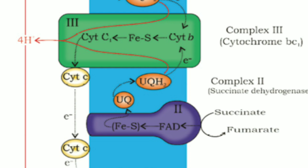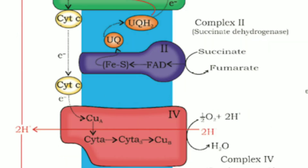From ubiquinone, these electrons are accepted by complex 3, that is the cytochrome B-C1 complex. Cytochrome C then transfers its electrons to complex 4, and from complex 4 these electrons are ultimately accepted by oxygen present in the mitochondrial matrix.